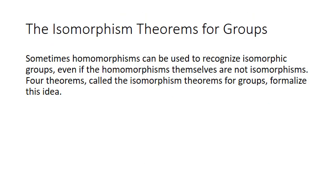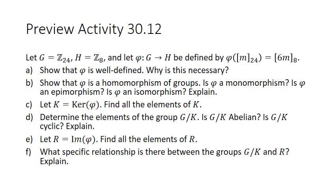Now we're going to talk about the isomorphism theorems for groups — four really important theorems. Sometimes homomorphisms can be used to recognize isomorphic groups even if the homomorphisms themselves are not isomorphisms. There are four theorems called the isomorphism theorems for groups that formalize this idea. We're going to go through all four and do some activities and prove them all — probably one or two today and the rest next time. Here is preview activity 30.12, which will give us the basic idea of the first isomorphism theorem.